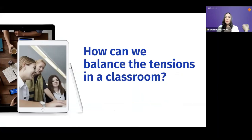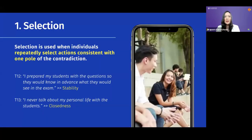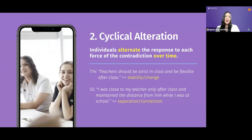Now, after observing your classroom, how can we balance these tensions and different expectations? There are three strategies to manage tension: selection, cyclical alteration, and segmentation. The first strategy, selection, means you repeatedly select actions consistent with one pole. For example, if you believe formality is best, you stick with formality — purely formal. Or if you select openness, you share personal stories and speak directly to students. You select one side and do not switch between the two.